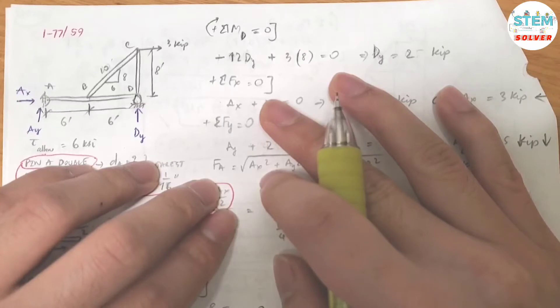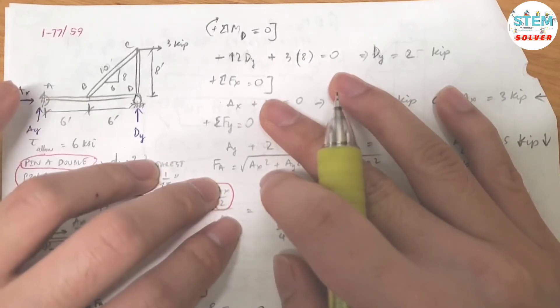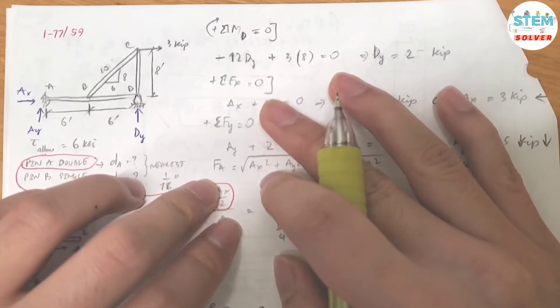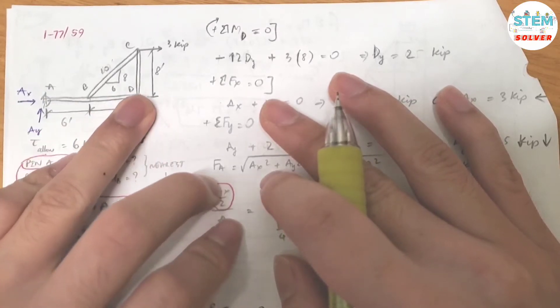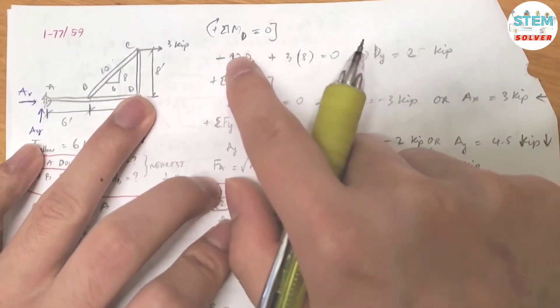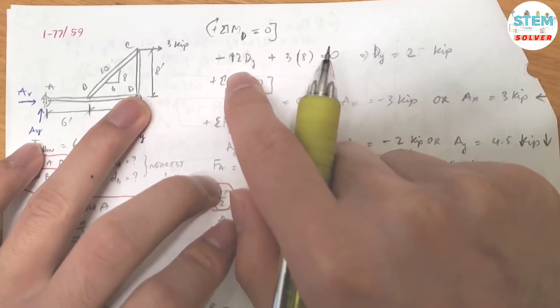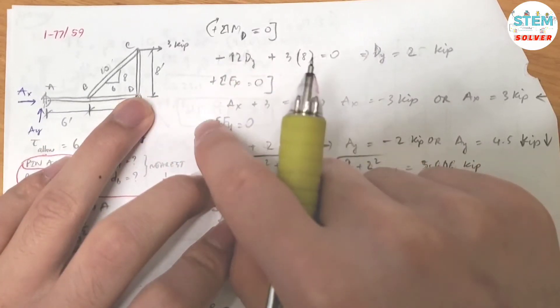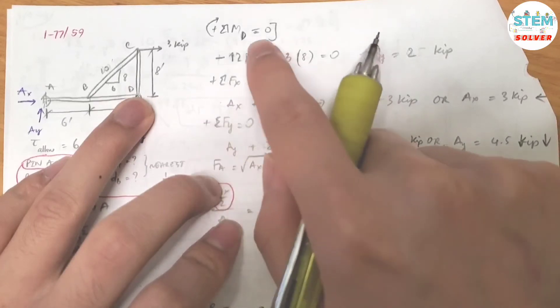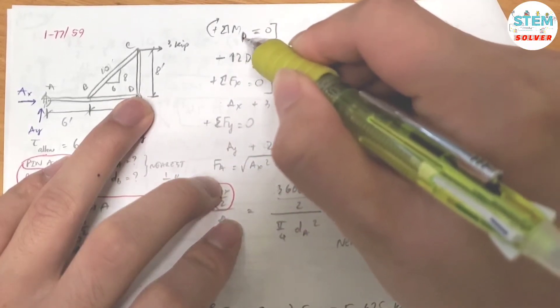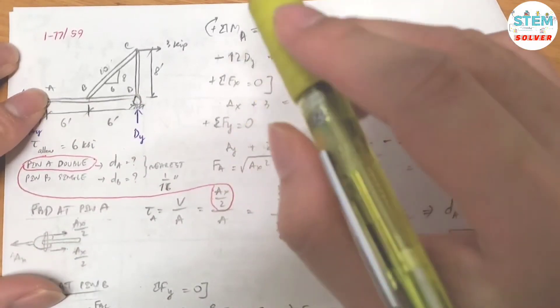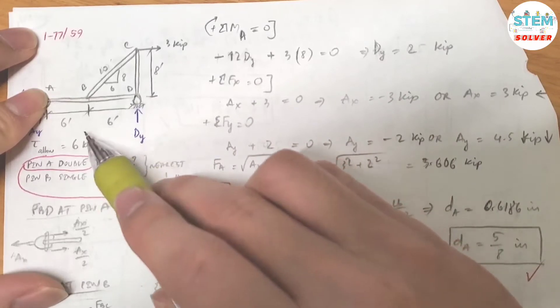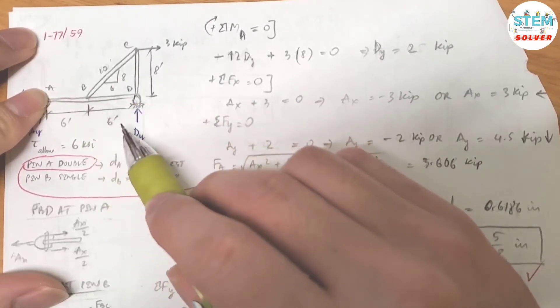Because we need to find the... you can take the summation about either A or D. What I did was I took the summation of the moment about A to find DY. Assume clockwise is positive. At A, I have negative 12 DY. The distance is 6 plus 6 equals 12, so DY counterclockwise is negative.